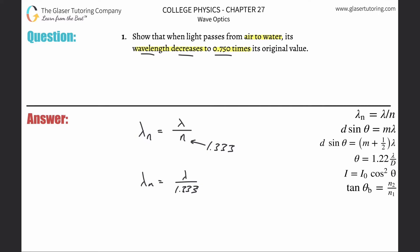So this is going to be 1.333. And what I want to show here is that the new wavelength in water relative to its wavelength in air, which is that of basically a vacuum, is going to be equal to this ratio.